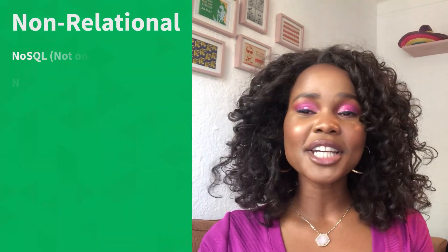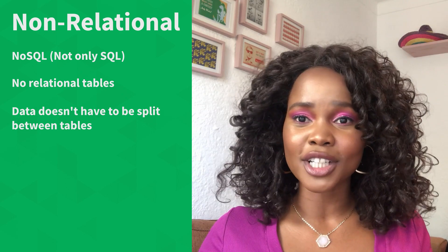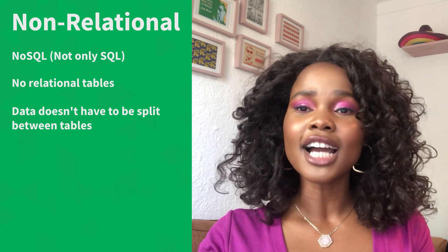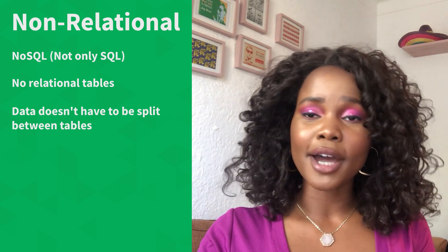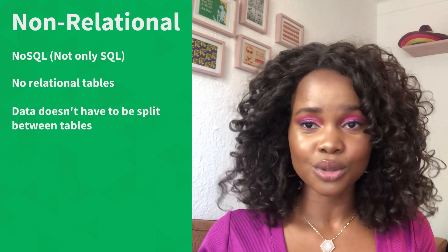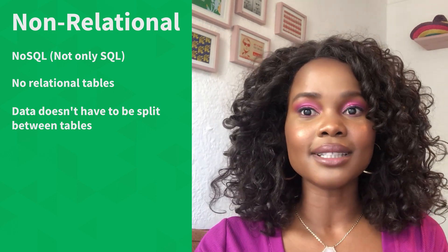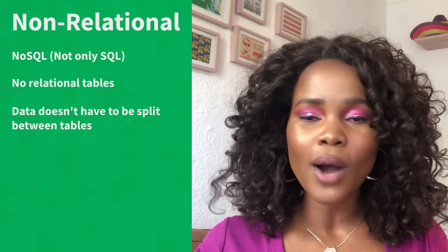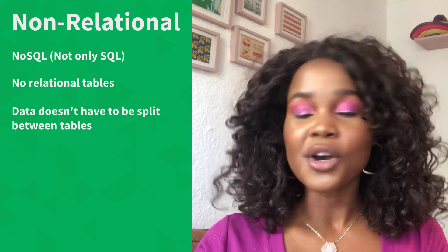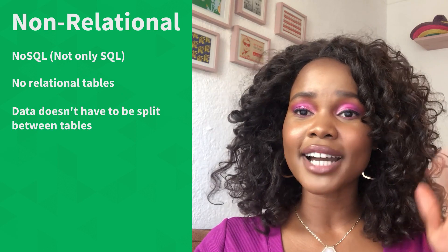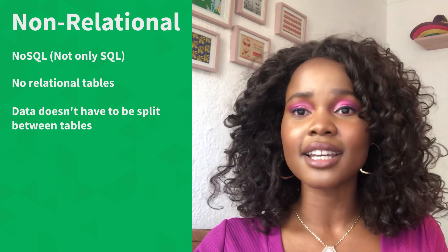The second type of database we're going to be looking at today are non-relational databases. These are databases that have no predefined structure, so there's no set rule in terms of what type of data you have to store and where you have to store it. This gives us flexibility — if there are any new or unforeseen requirements in our application, we're not limited to the predefined structure we initially set, as we would be with relational databases.